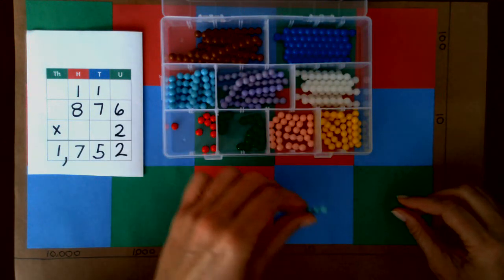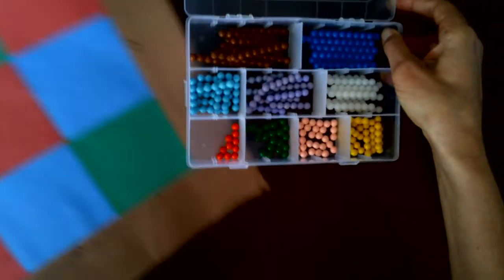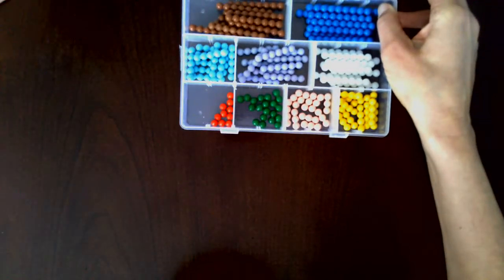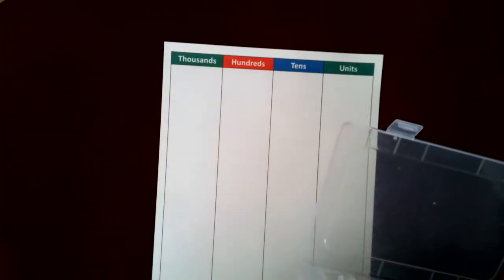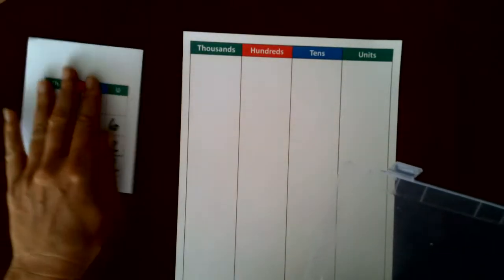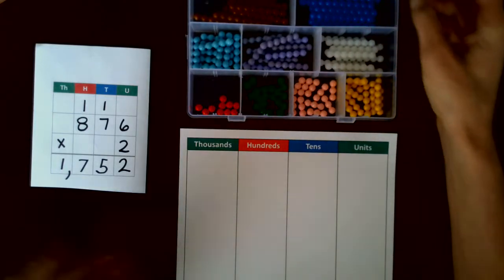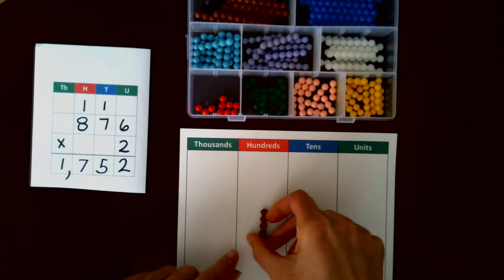That is how to do multiplication using the checkerboard. Now I told you I was going to show you a modified version if you don't have access to a checkerboard, and that is using this paper that just has the same color coding.